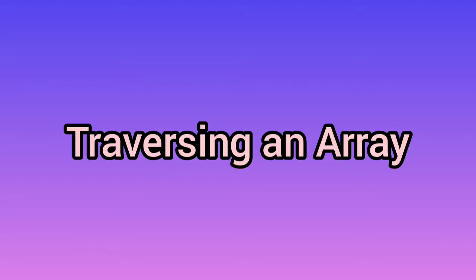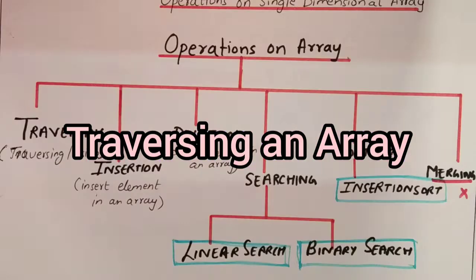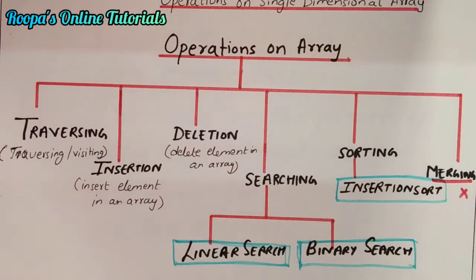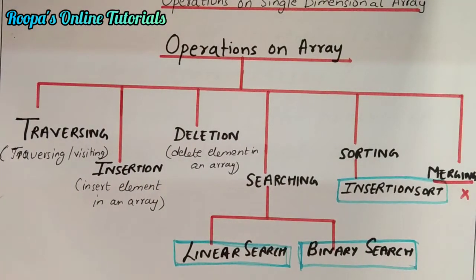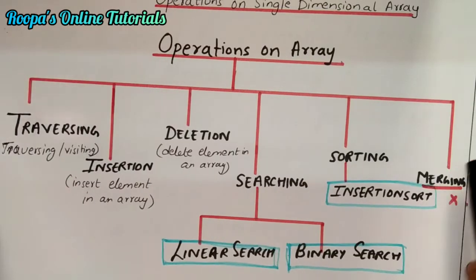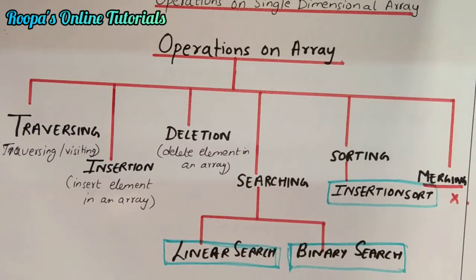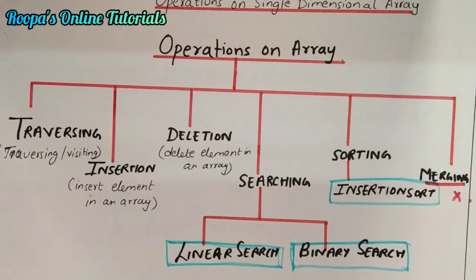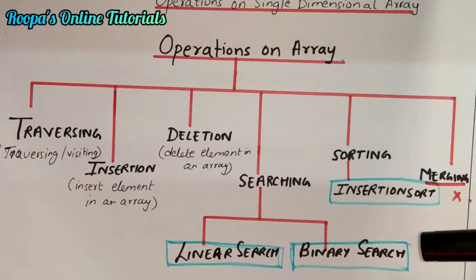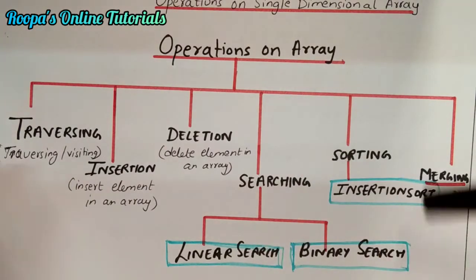Hello, welcome to Rupa's online tutorials. Today we're going to look at one important operation of data structures — it is traversal of arrays. Before that, you can see I have drawn a chart so that it is easy for us to remember the different operations. I would give a tip that you also draw it like this and keep it aside when you are learning these algorithms and programs.